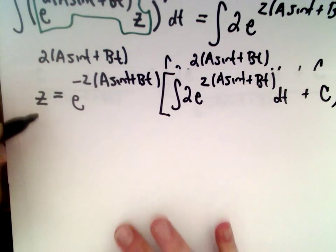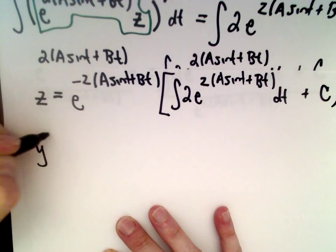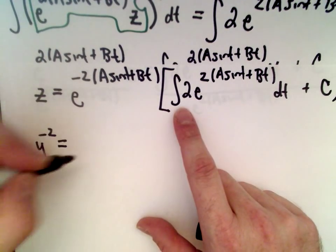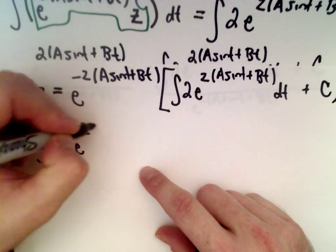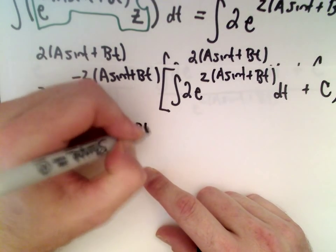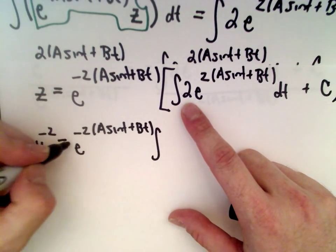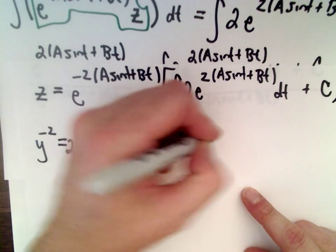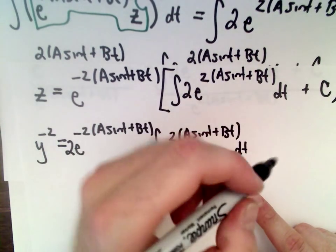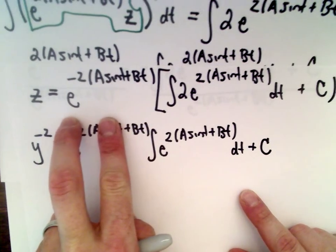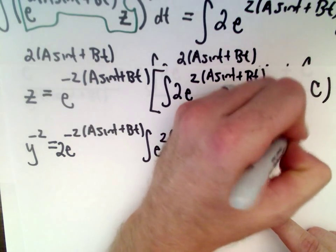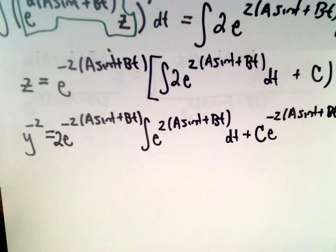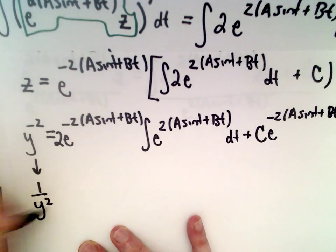We're almost there. Since z equals y to the negative second power, that means z equals 1 over y squared. Distributing, we get e to the negative 2a sine of t plus bt, multiplied by the integral of e to the 2a sine of t plus bt dt, plus c times e to the negative 2a sine of t plus bt. This equals 1 over y squared, so taking the reciprocal of both sides gives y squared equals 1 over all that stuff.